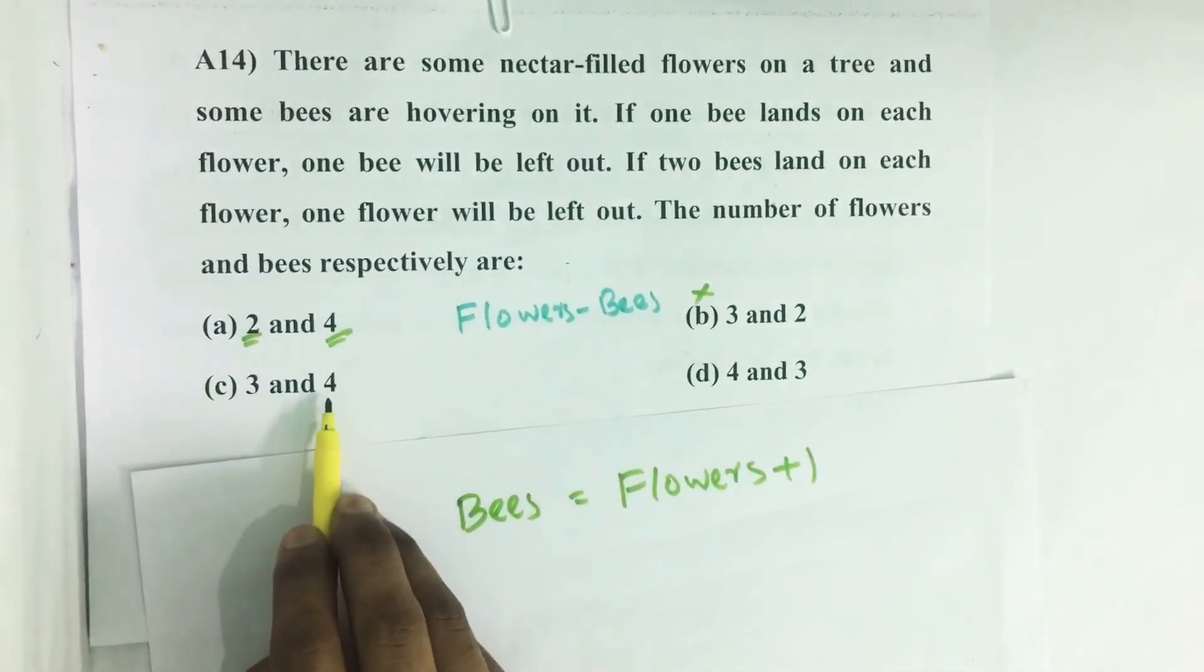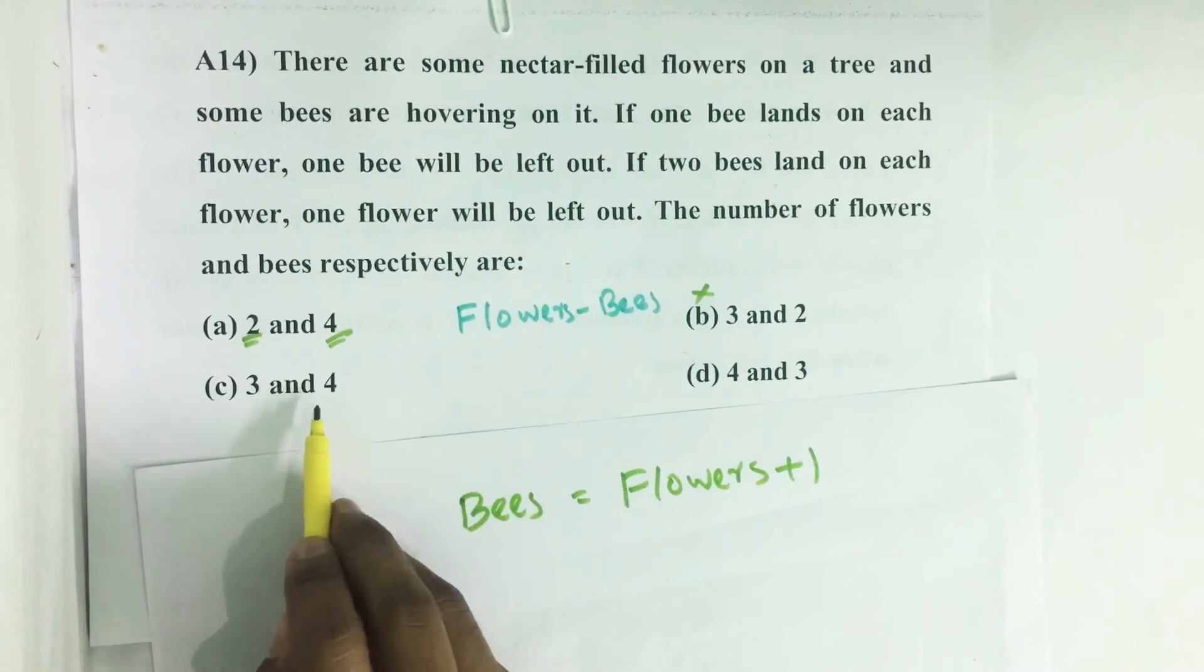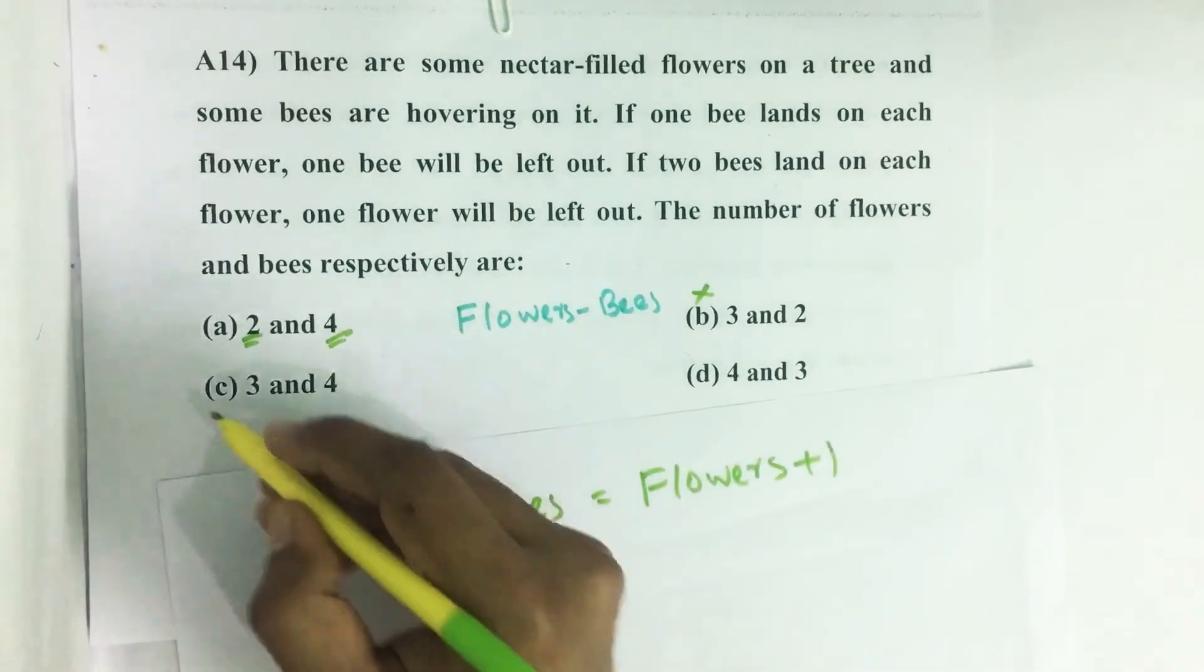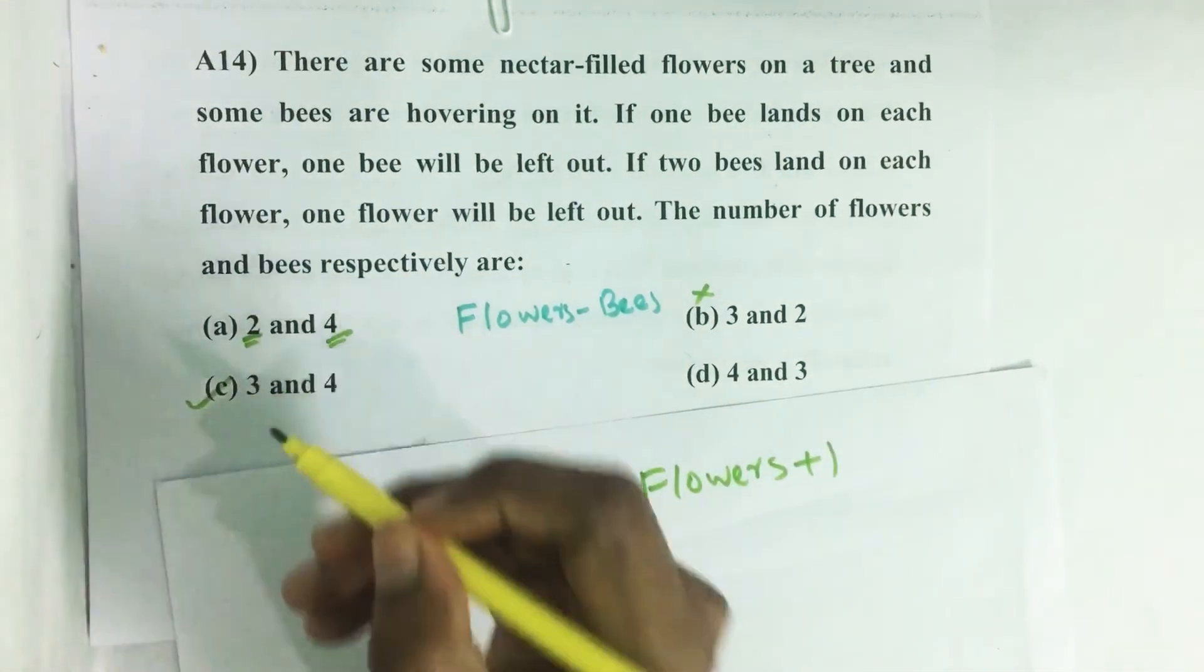Here bees are larger, more than flowers by one number. So our answer is option C, three and four.